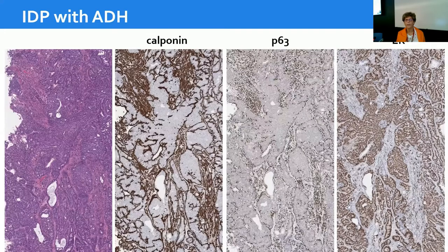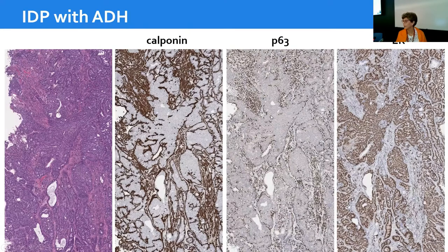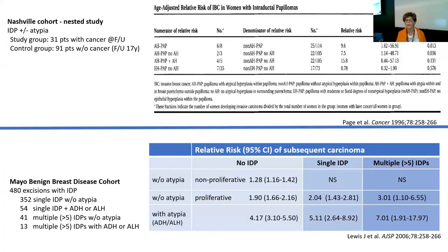Here is another example of an intraductal papilloma with ADH. Calponin and P63 help visualize the fibrovascular cores so you can better appreciate the extent of epithelial proliferation. In this case, the epithelial proliferation occupying these spaces is very uniformly and diffusely positive for ER, supporting the diagnosis of intraductal papilloma with ADH.